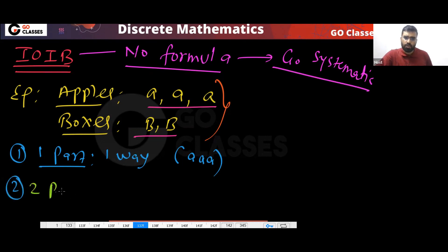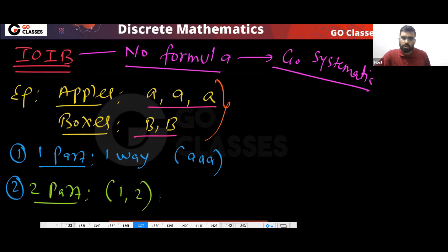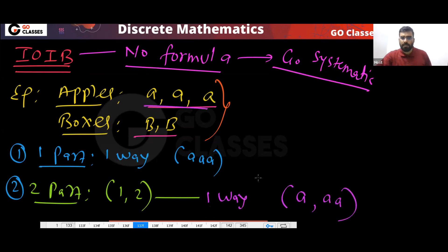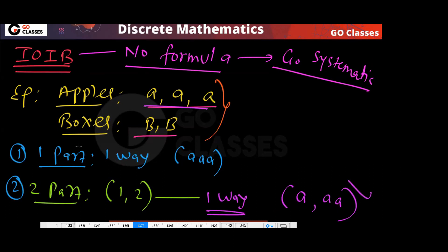If you use two parts (two boxes), how many ways are there? The only partition is 1, 2 — only one way, because all the objects are the same. So only this you can do; nothing else. Very simple.